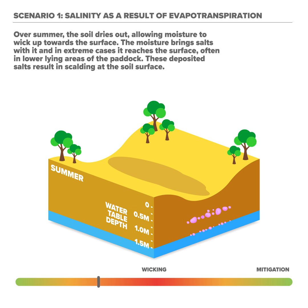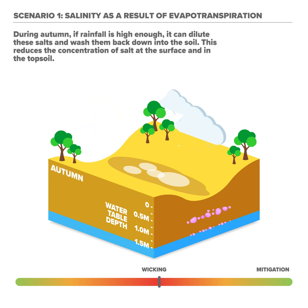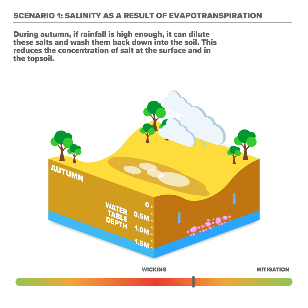Over summer, the soil dries out, allowing moisture to wick up towards the surface. The moisture brings salts with it and in extreme cases it reaches the surface, often in lower lying areas of the paddock. These deposited salts result in scalding at the soil surface. During autumn, if rainfall is high enough, it can dilute these salts and wash them back down into the soil, reducing the concentration of salt at the surface and in the topsoil.